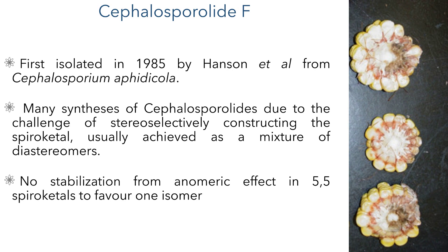Much of the difficulty in stereoselectively synthesising 5,5-membered spirochetals stems from the fact that they have less anomeric stabilisation than systems containing 6-membered rings, and therefore there is little difference in the energy between both isomers.